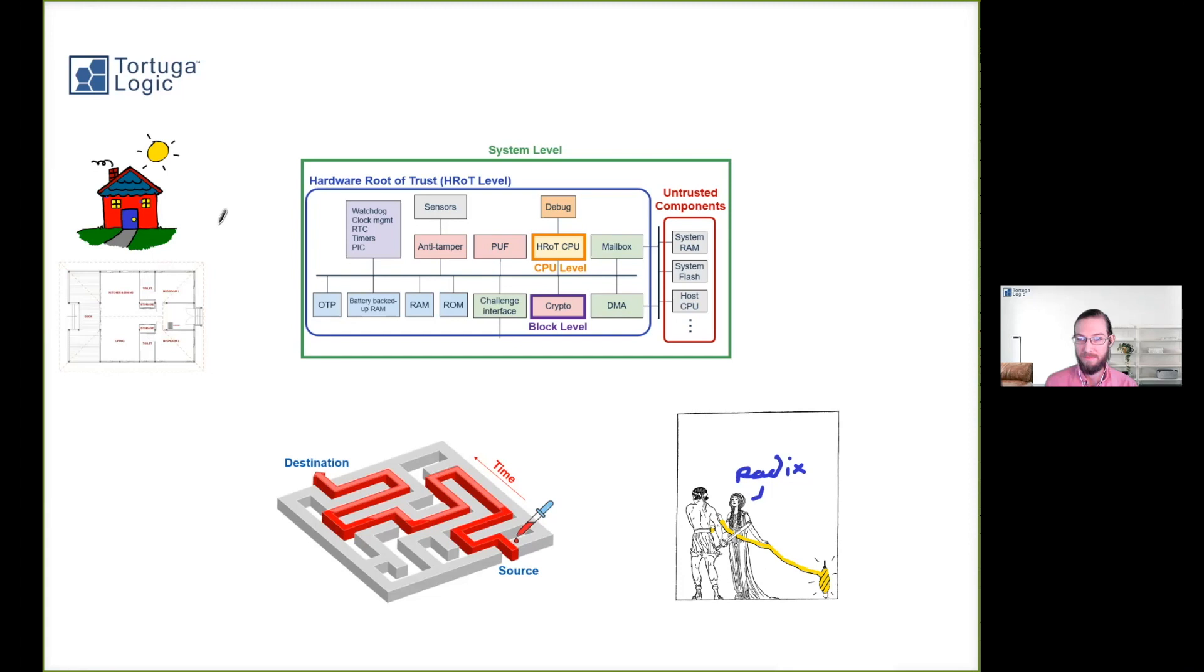And information flow analysis tells you in advance whether downstream those kinds of things are going to happen. So how does a root of trust play into this? A root of trust is like a home in that you have things that you'd like to protect, for example, cryptographic keys, and those things shouldn't necessarily leave the device, the root of trust, to the host system.